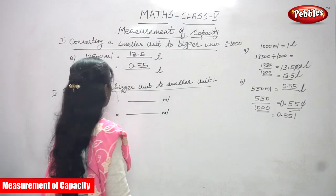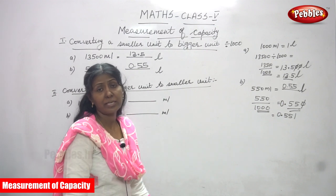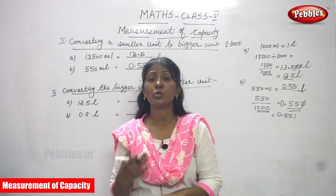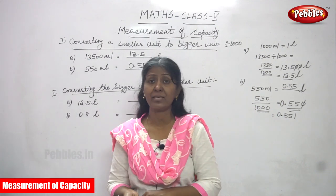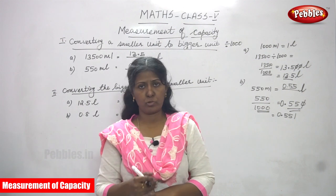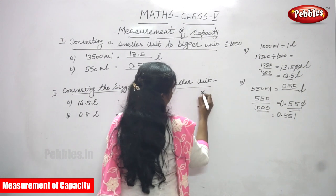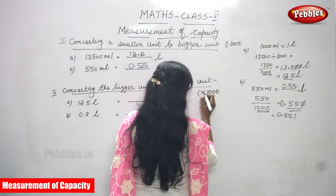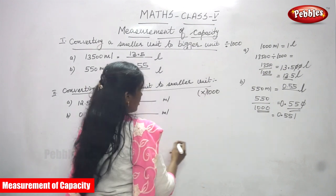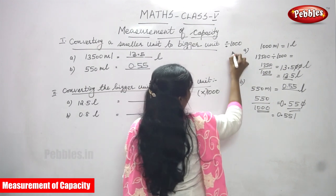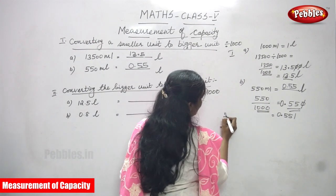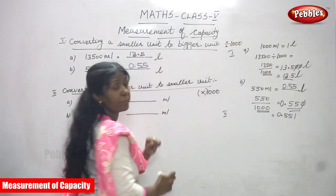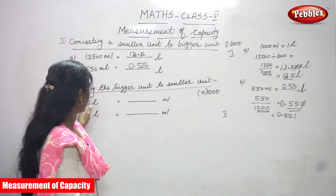Next, converting the bigger unit to smaller unit. Bigger to smaller means you have to multiply by one thousand — this is the rule. Now we are going to do the second subdivision: converting the bigger unit to smaller unit.